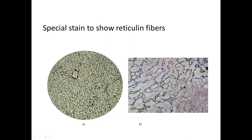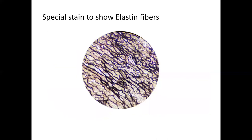Here is the low power view and the high power view to illustrate special stains. This is a special stain of the wall of the aorta to show elastin fibers. Elastin fibers in H&E will stain just pink, but here you see the wavy appearance of elastic fibers colored black, while the collagen fibers are stained in brown.